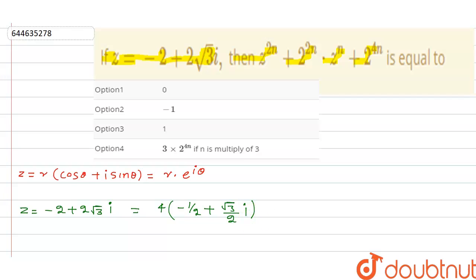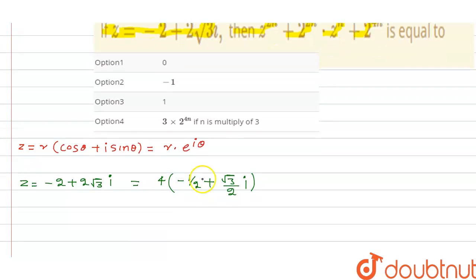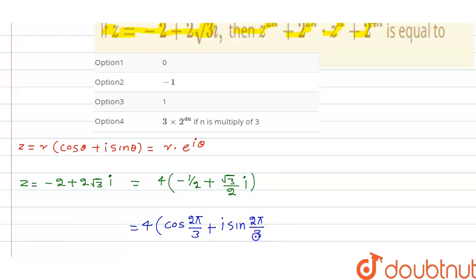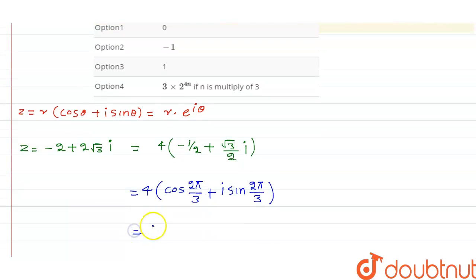Basically, minus 1/2 is cos(2π/3) and root 3/2 is sin(2π/3), so this becomes 4 into (cos(2π/3) + iota·sin(2π/3)), which in Euler form is 4·e^(i·2π/3).